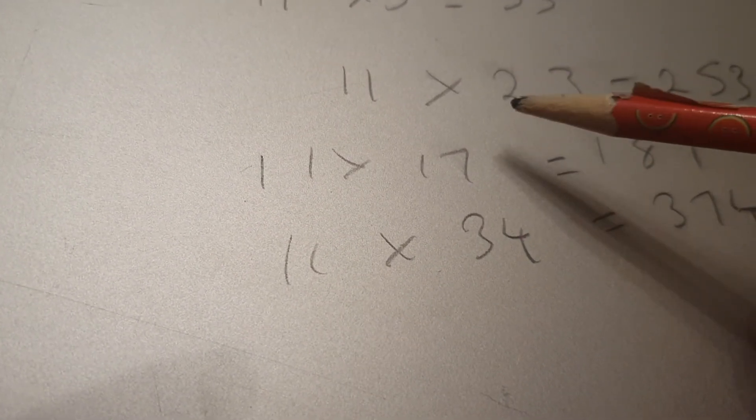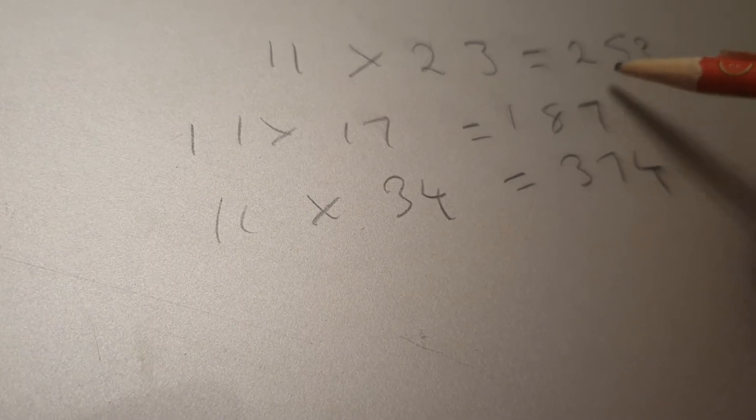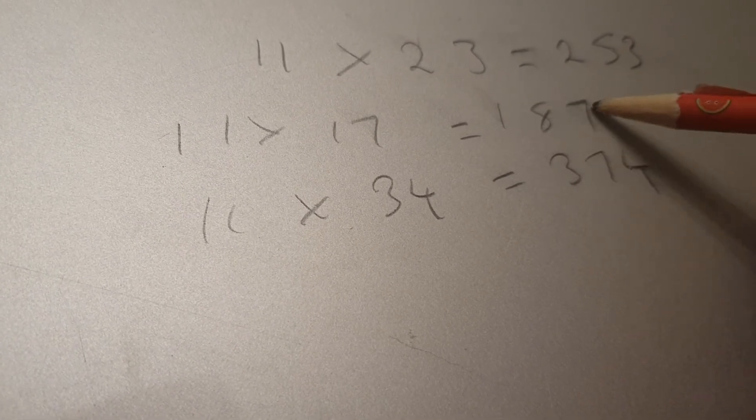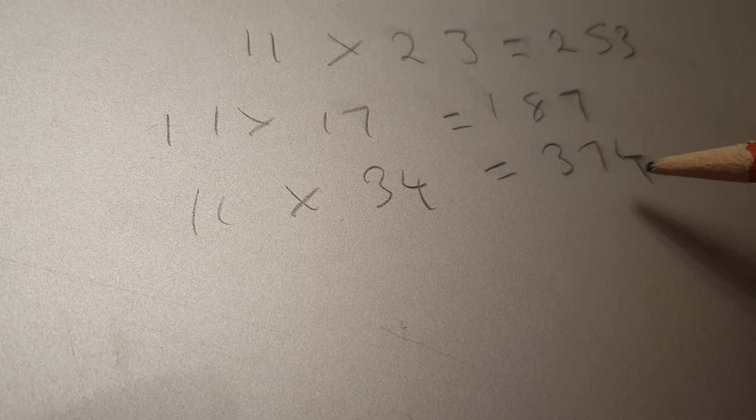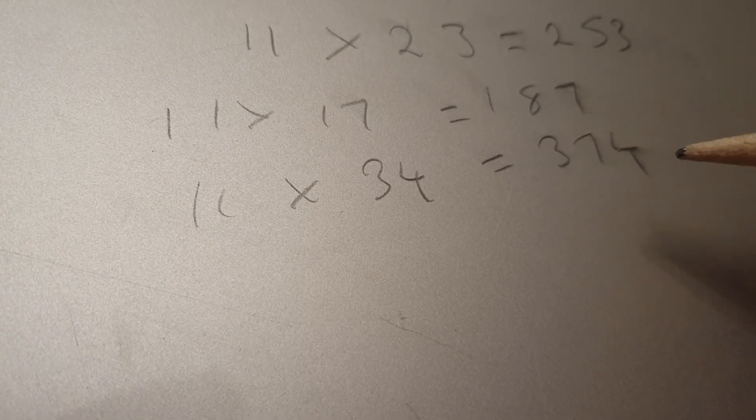So let's look at these sums that we did earlier on. 11 times 23. 2 and 3, add them together, put the 5 in between. Times 17, 1 and 7, put the 8 in between. 11 times 34, 3 and 4, add them together, put the 7 in between.